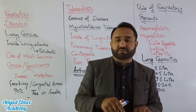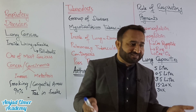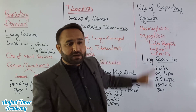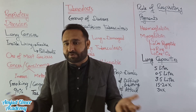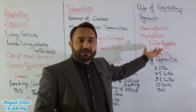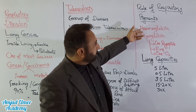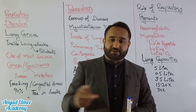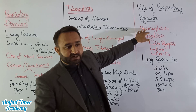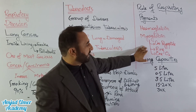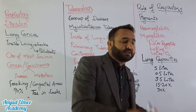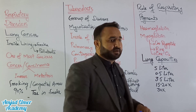The second respiratory pigment is myoglobin. 'Myo' means muscle, so myoglobin is a globular protein found in muscles, not in blood. Hemoglobin has four polypeptide chains — two alpha and two beta — with 574 amino acids, while myoglobin has only one polypeptide chain. Both contain a heme group, similar to the heme group in chlorophyll. Myoglobin combines with one oxygen molecule, and its ability to carry oxygen is much greater than hemoglobin.